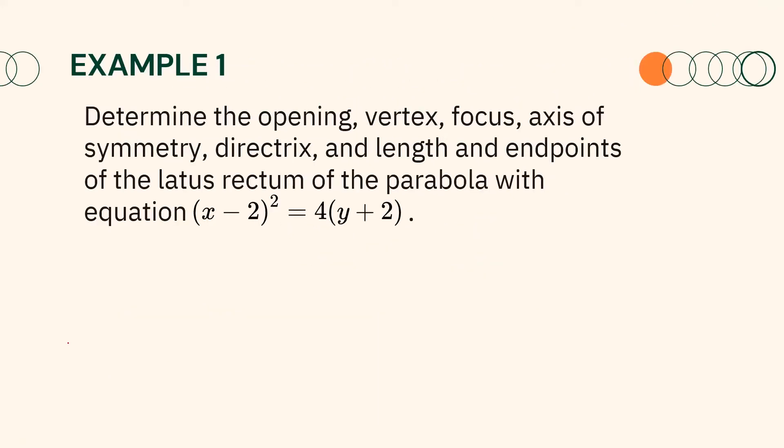For the first example, determine the opening, vertex, focus, axis of symmetry, directrix, and length and endpoints of the latus rectum of the parabola with equation (x minus 2) squared equals 4(y plus 2). Since the equation is already written in standard form, it is very easy to determine the vertex and the values of 4p and p.